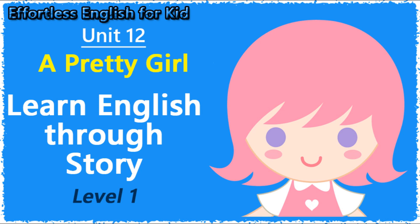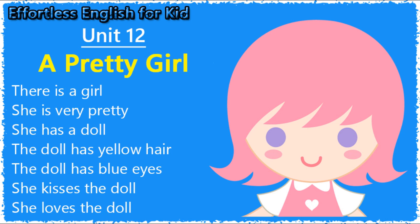Learn English through story. Unit 12: A Pretty Girl. There is a girl. She is very pretty. She has a doll. The doll has yellow hair. The doll has blue eyes. She kisses the doll. She loves the doll.